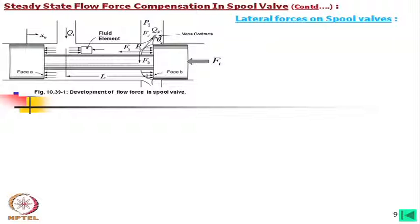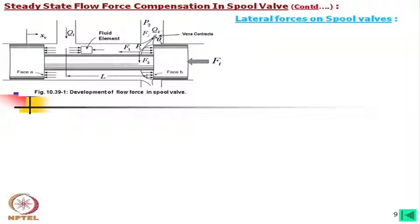Apart from the axial flow force, there is also a lateral force on the spool valve. The total jet force has two components: F1 is the axial flow force which must be controlled by the drive, and F2 is the lateral force. For a full rectangular port or uniformly distributed discrete ports, F2 forces are ideally equal and opposite around the circumference, cancelling each other.